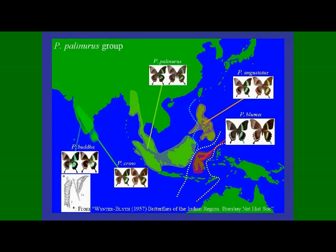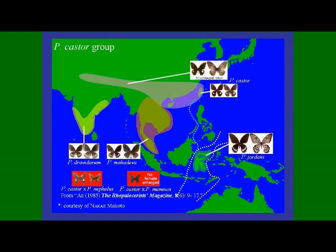Thus, the Southern Indian populations are quite separated from other Papilio parinurus races. Sixth is the Papilio castor group. Although the distribution of this group on the Asian continent resembles that of Papilio paris, this group does not occur on the Great Sunda Islands. A race found in Southern India is known as Papilio drapedalium.